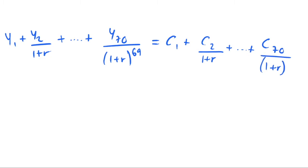And this is equal to C1 plus C2/(1+r) plus we have a load more consumption terms for consumption in each period, and then we get the final period consumption in period 70 divided by (1+r) to the power of 69.